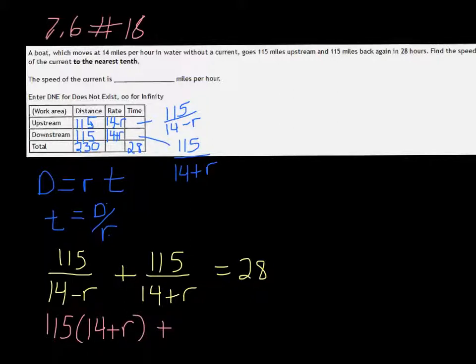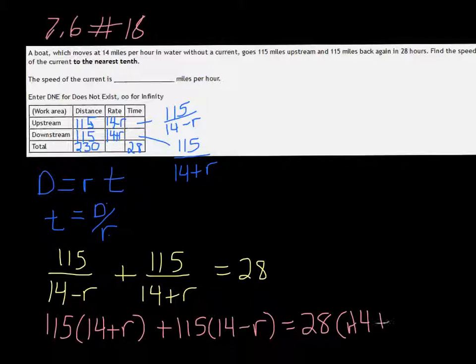On the second part, it's the opposite. It's got the 14 plus r, we need to multiply it by the 14 minus r. But the 28 doesn't have either, so you have to put both of those in: 14 plus r and 14 minus r.